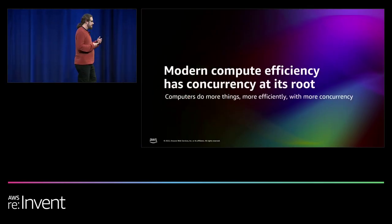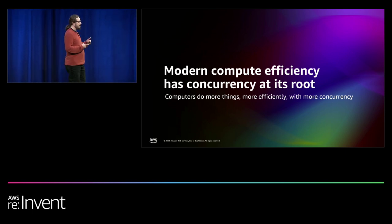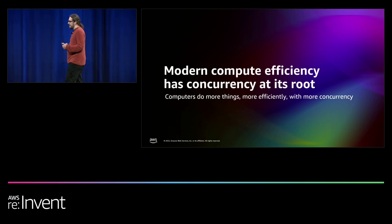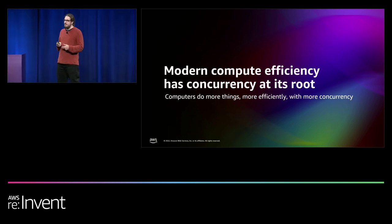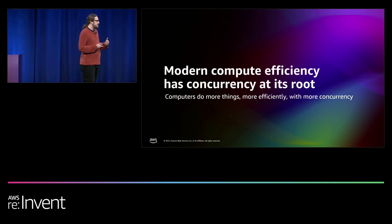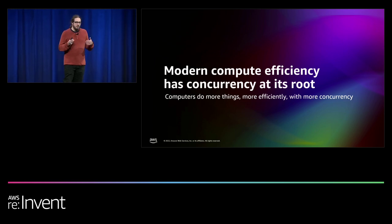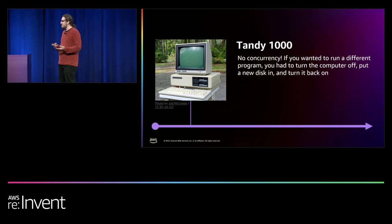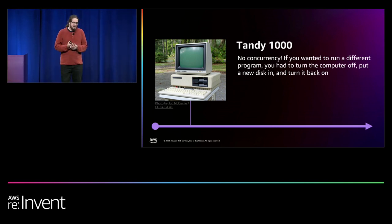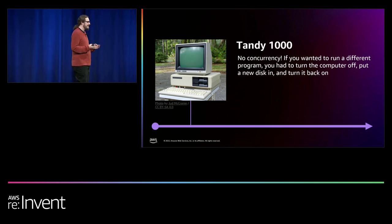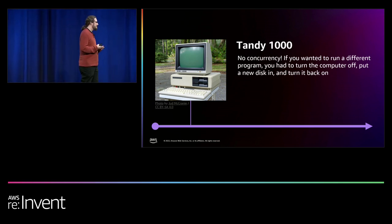Efficiency really goes into the cost you'll face when developing applications, and concurrency is at the root of all efficiency problems. Computers throughout their development have enabled us to do more things more quickly with more concurrency. I want to talk about a little bit of the timeline, starting with the Tandy 1000 — the first computer I actually wrote code on.